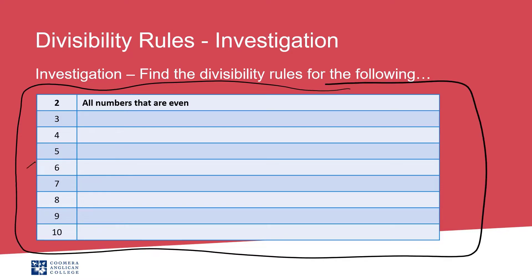You want the numbers or the digits 2 through to 10, and then you want a space next to them. What you're going to do is you're going to find the divisibility rule for each number. I've done the first one for you.